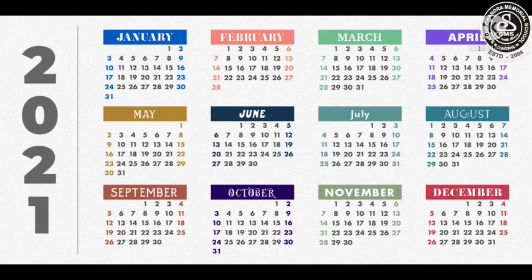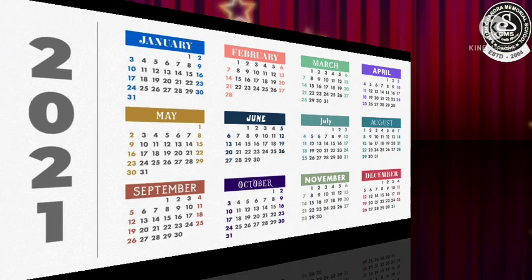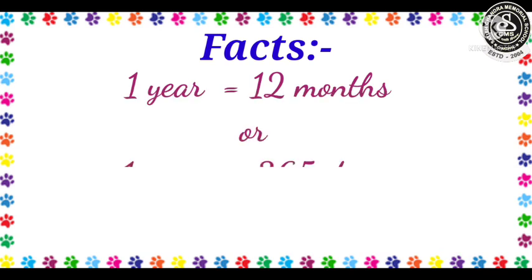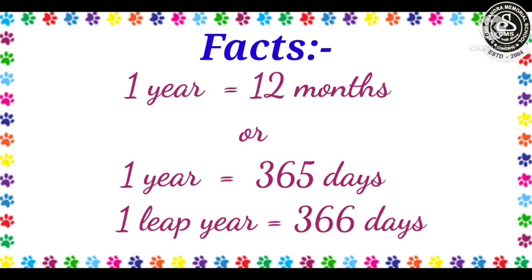Children, have you seen the calendar properly? There, you have seen the months' names also. So, let us learn some facts about the months. The first month is January, then February, March, April, May, June, July, August, September, October, November, and December. The first fact is 1 year is equal to 12 months. 1 year is equal to 365 days. And 1 leap year is equal to 366 days.